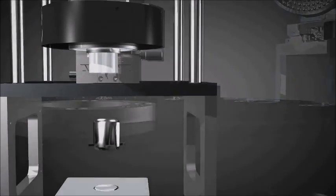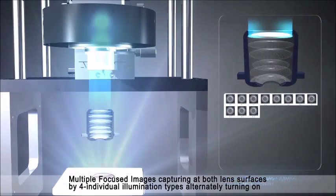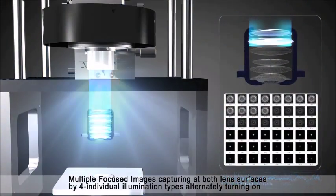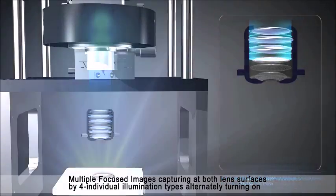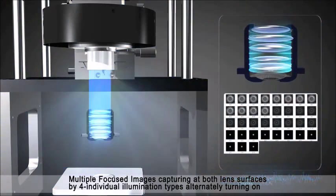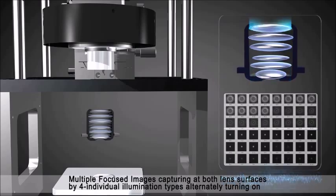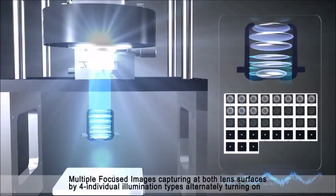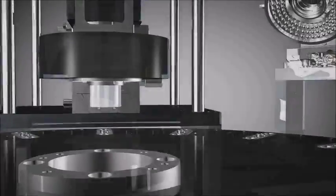WISCOPE captures images by focus change on upper and bottom sides of lens surfaces by four individual illumination types alternately turning on. In other words, if there are six lenses, first it will capture 12 images from upper and lower sides of lens surfaces.